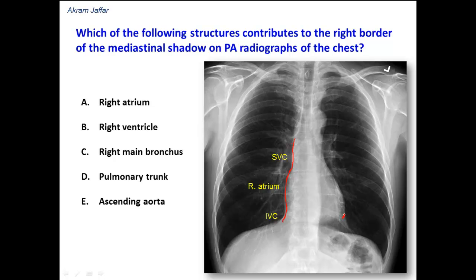On the left side, we have the apex of the heart, and the left border here is formed by the left ventricle. Then there is a small area here which represents the auricle of the left atrium, and then another region for the pulmonary trunk, and then, as you can see, the aortic knuckle which represents the arch of the aorta. So, this is the mediastinal shadow.